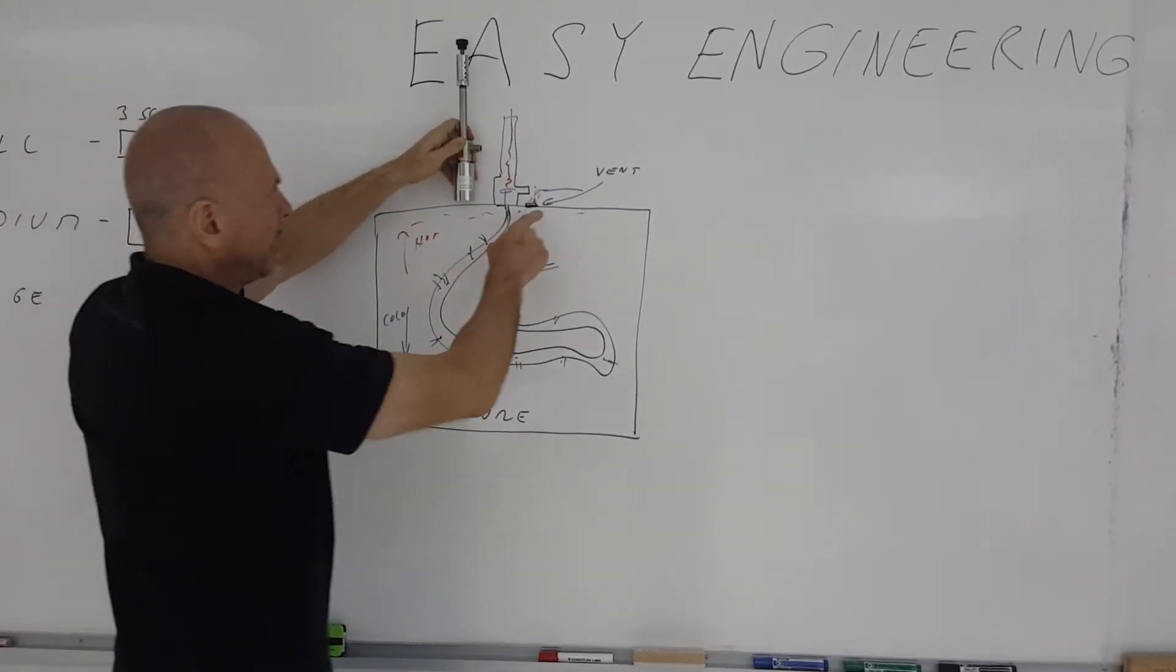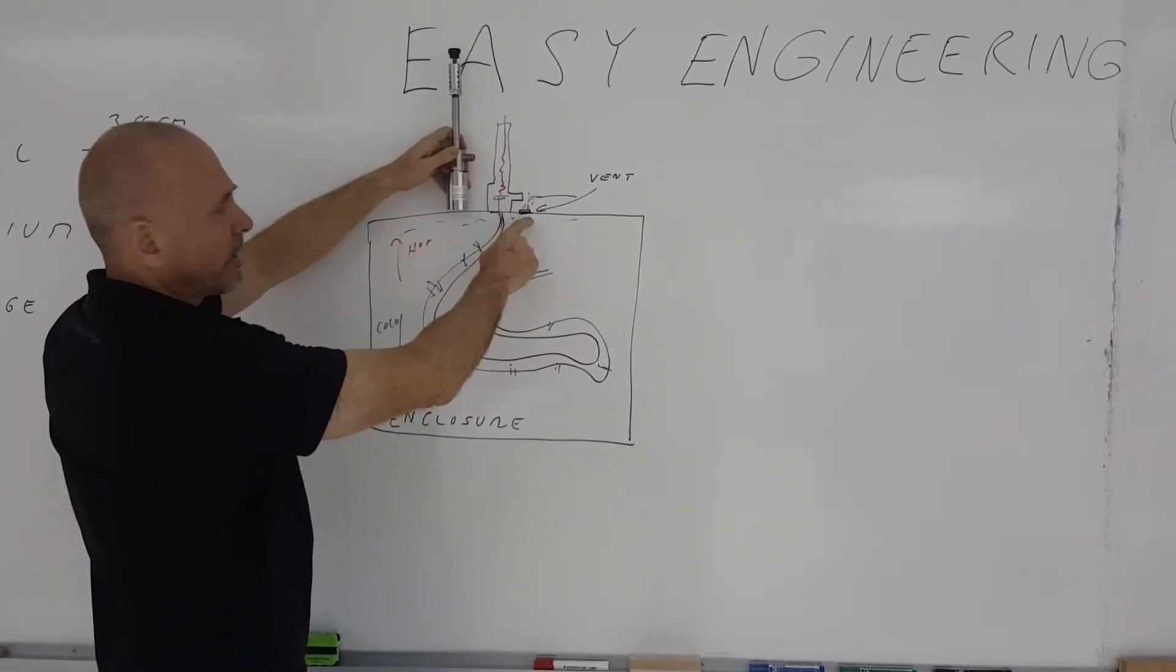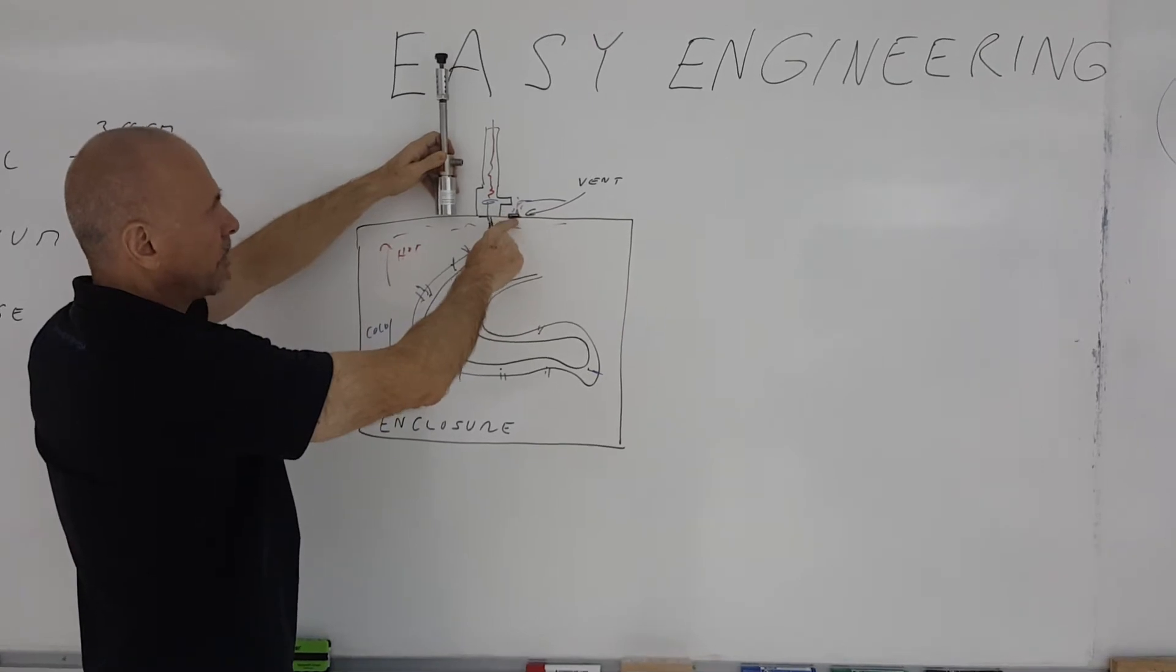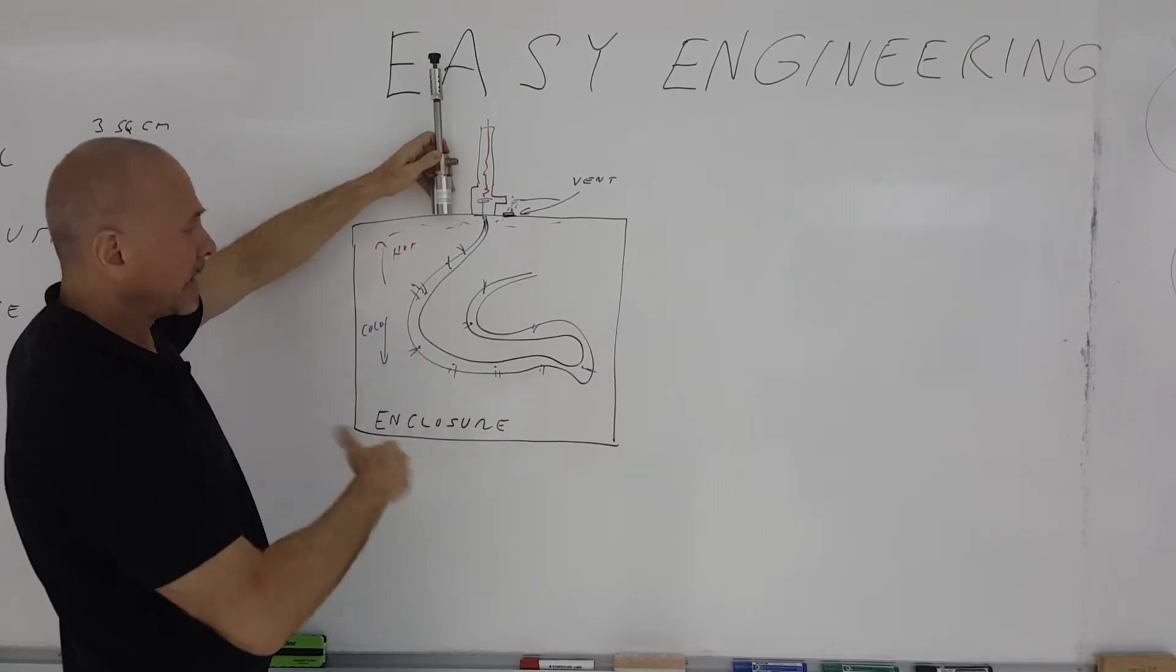You've got to have a vent either built into a vortex tube system or a separate vent breather cap that's mounted again at the top or on the side near the top of an enclosure to let the hot air that's being displaced out.